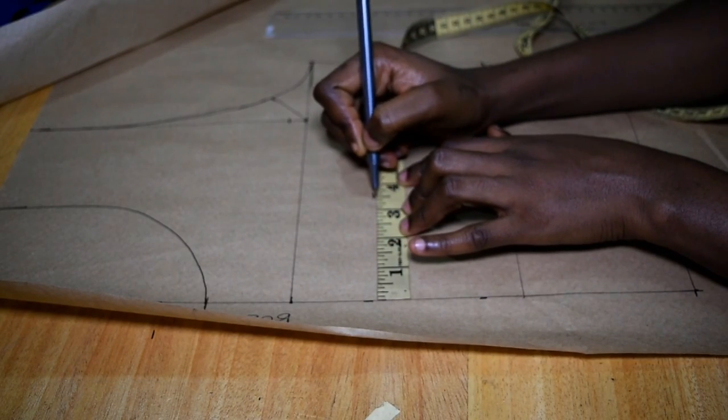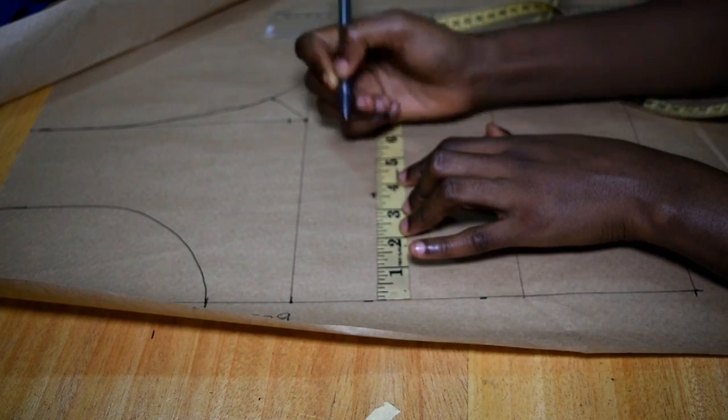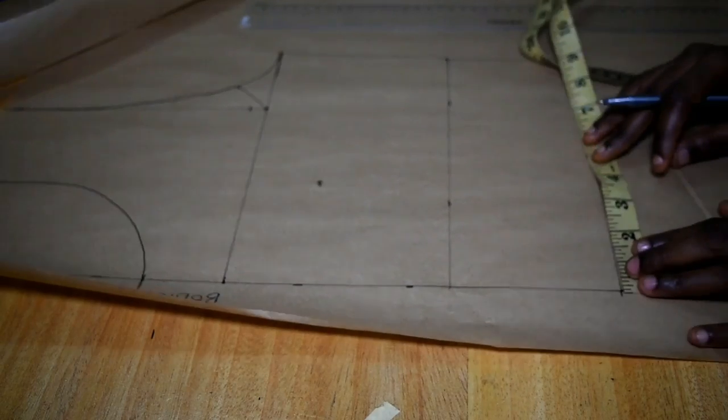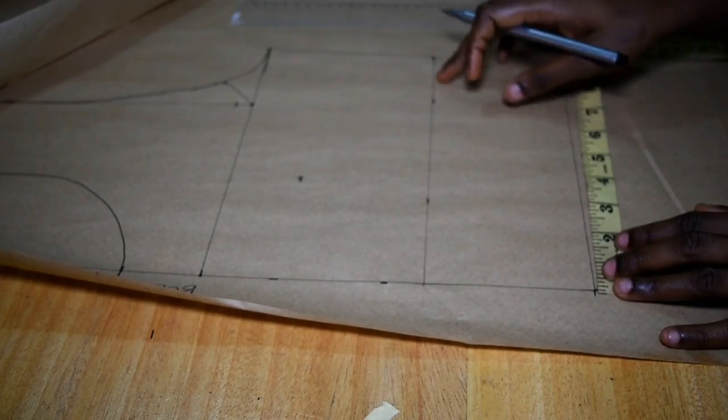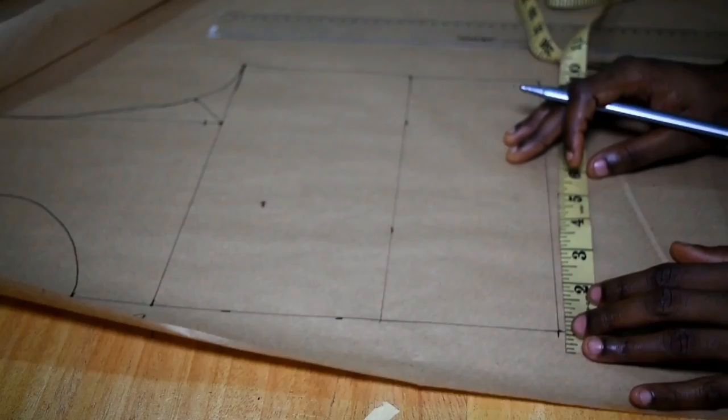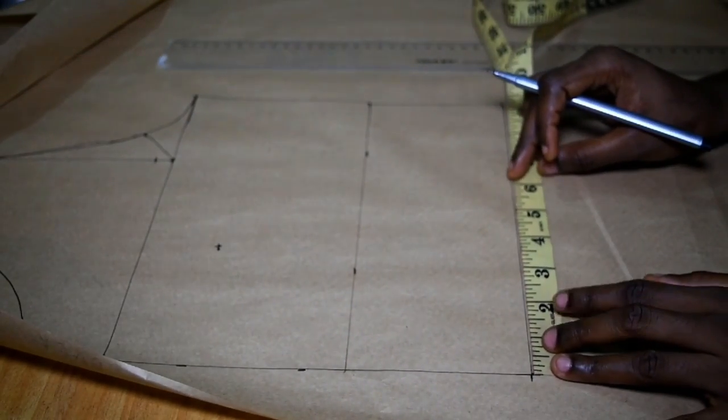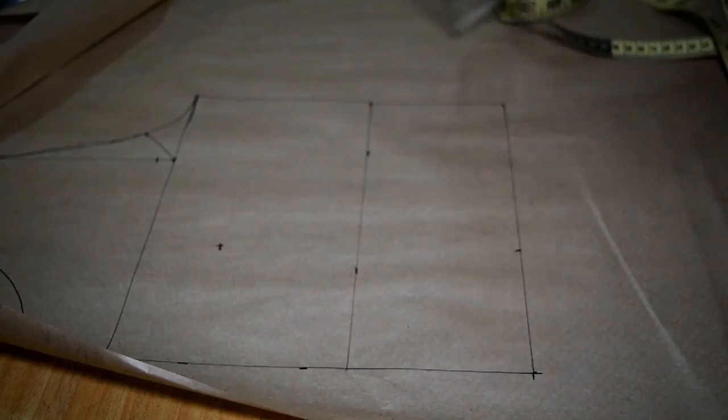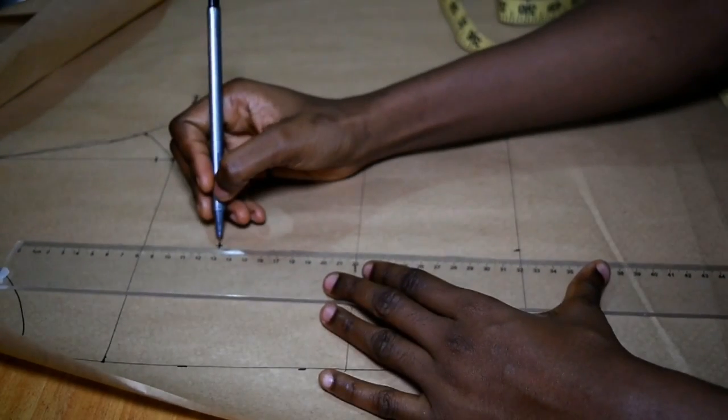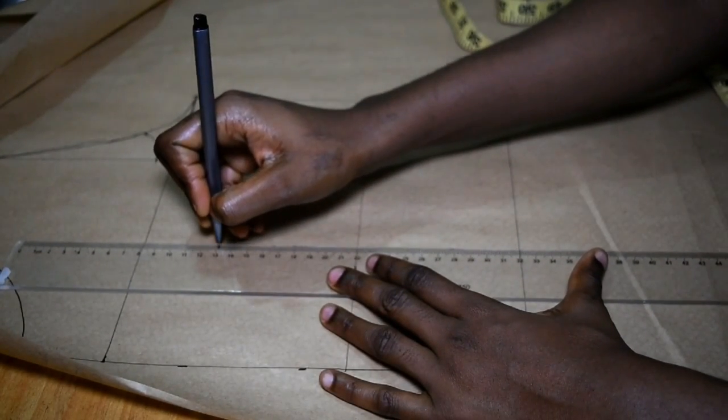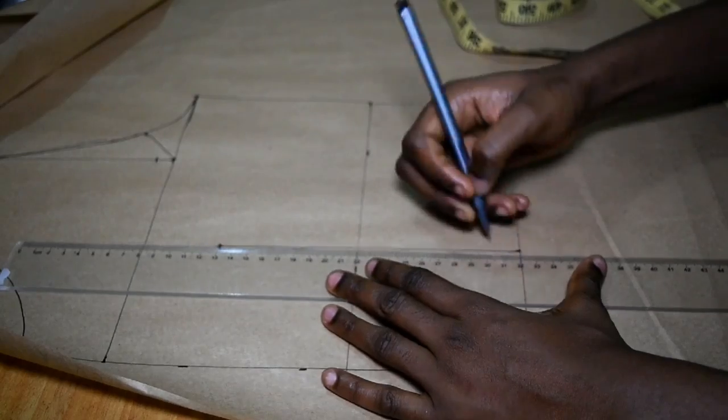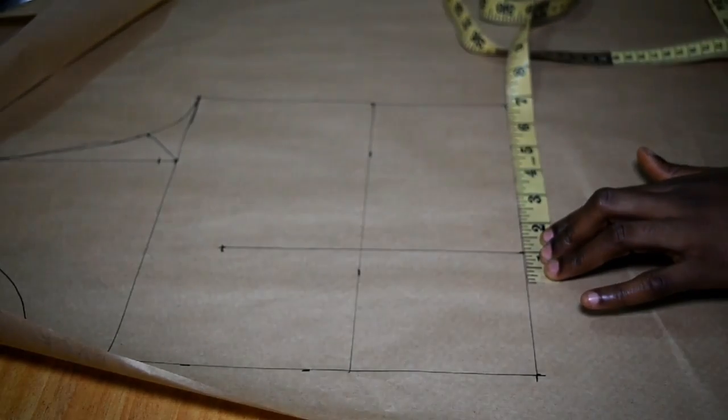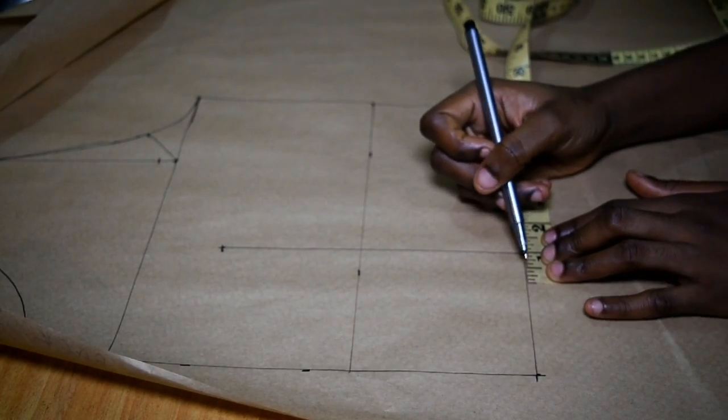You're going to draw your darts normally as you would do for your basic bodice. The dart construction is similar to that of your simple bodice, and then for your back bodice your dart allowance is one inch - it's not like the front bodice that is 1.5 inches. Your dart allowance for the back bodice is one inch, so you're going to have a half inch for each side.